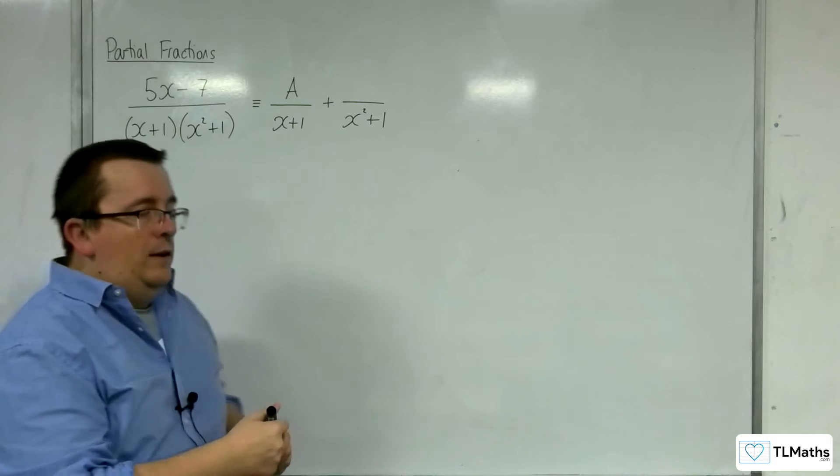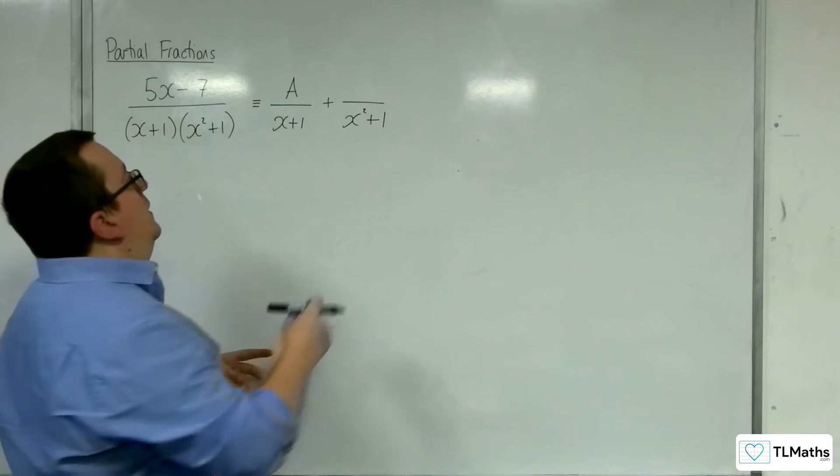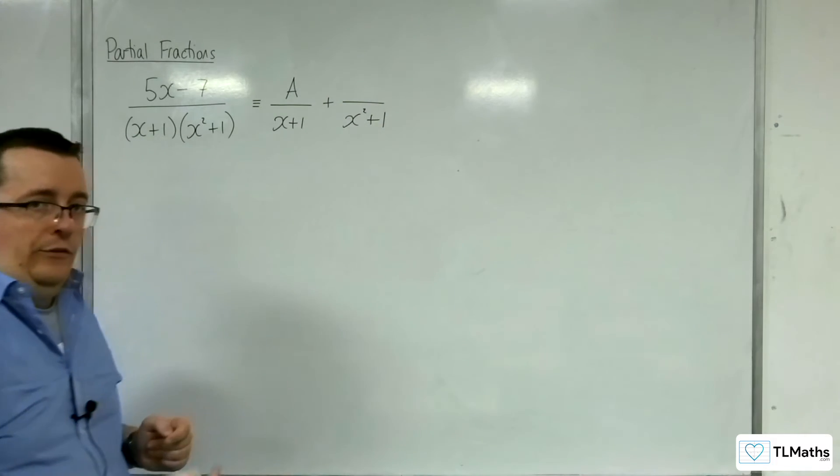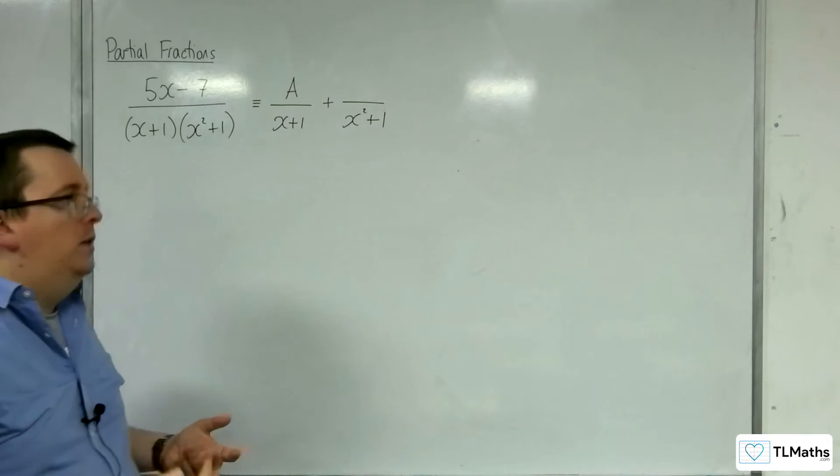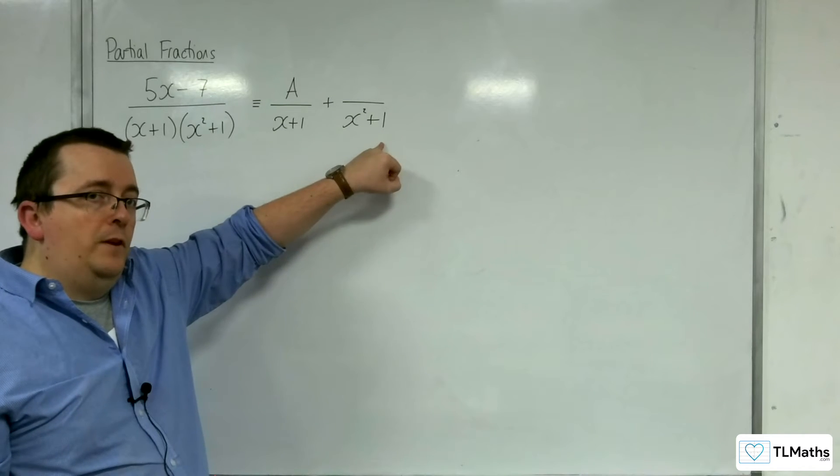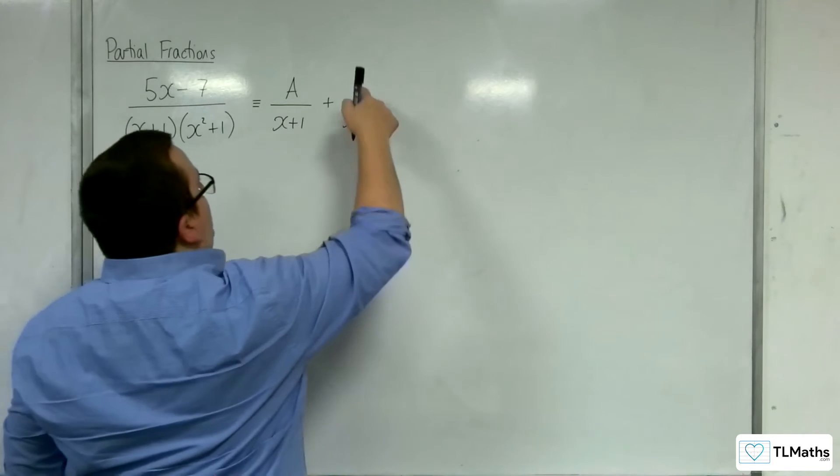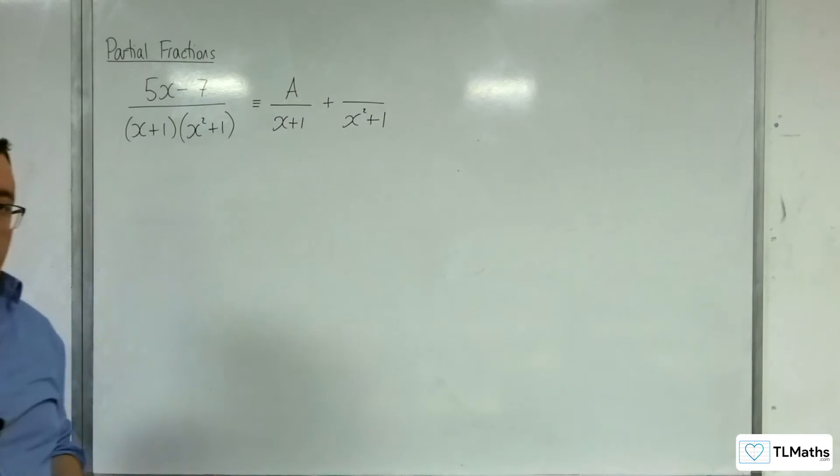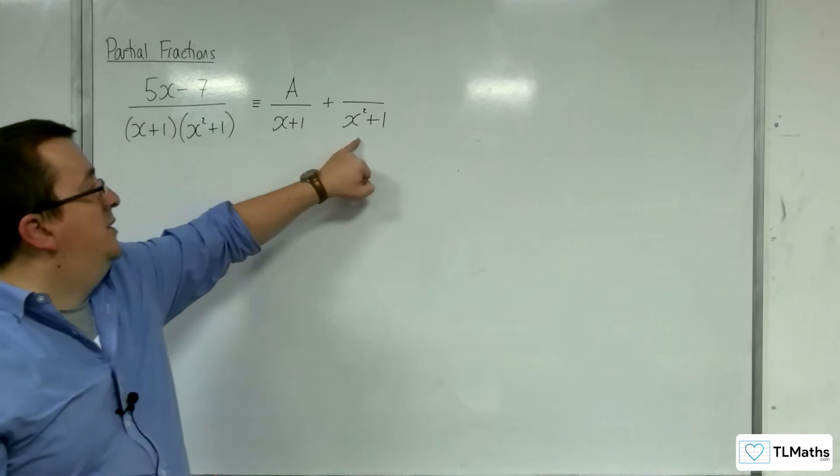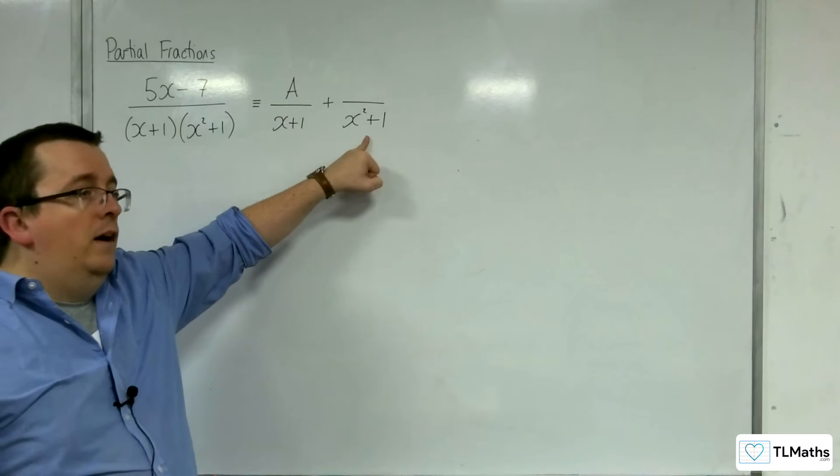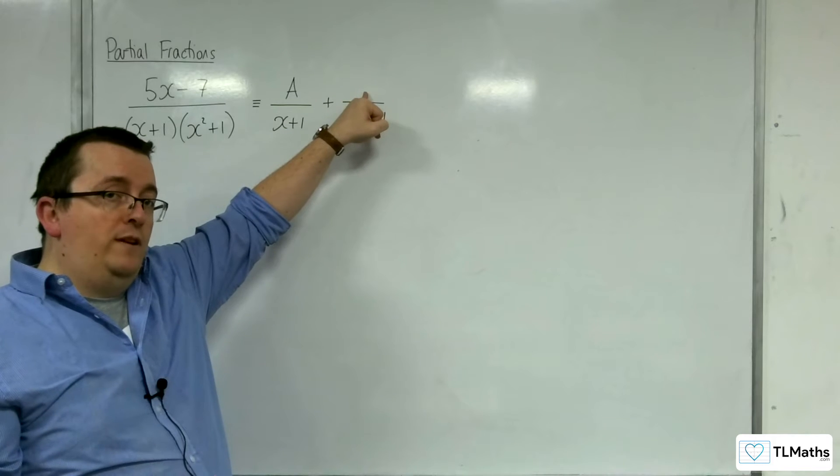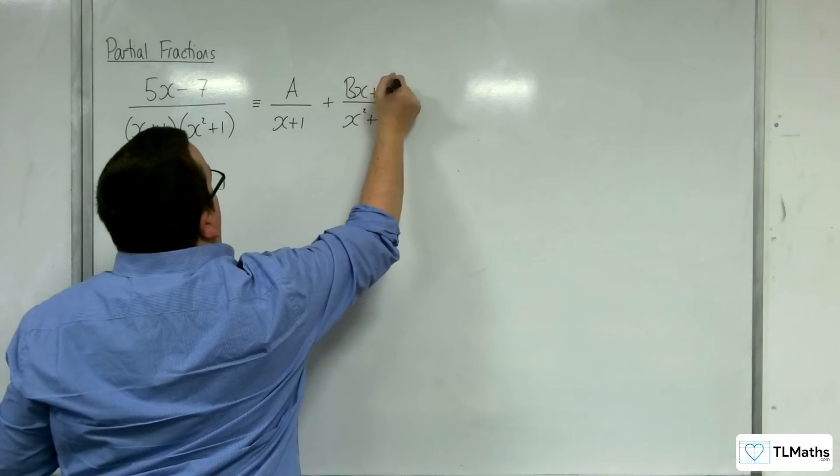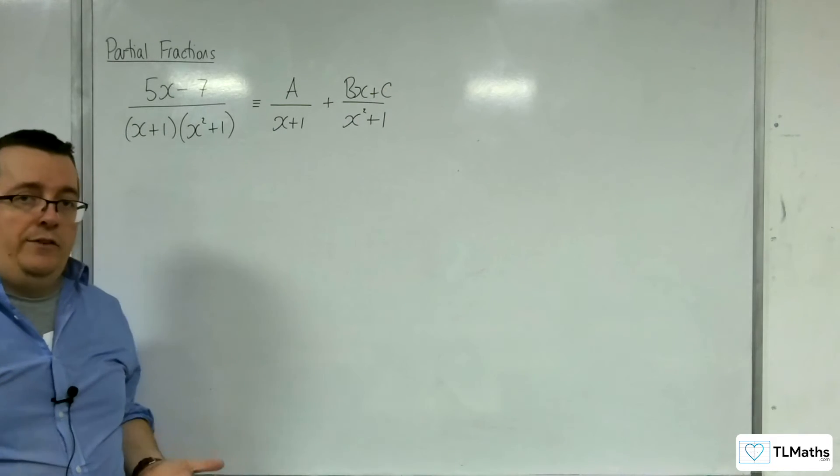But we must deal with every eventuality. And so in order to make it work, we're going to have to have a term in the numerator that is 1 less in order, in power, than the denominator. So what we need is a linear term, not a constant term, a linear term for the x squared plus 1. So here I could write Bx plus C because that is a linear term.